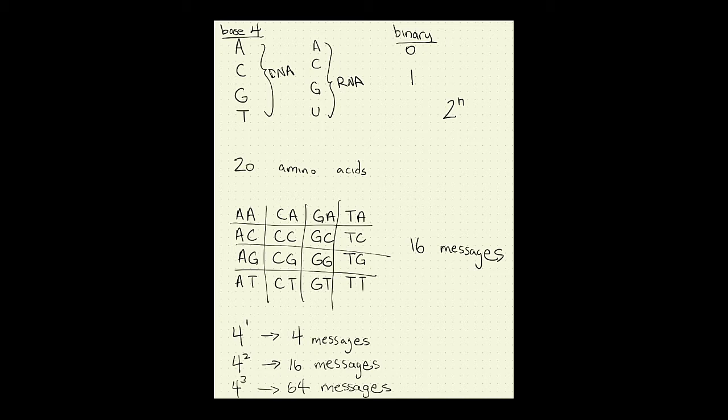We have more than 20 possible messages, giving us some room to spare. We can't talk about 2.5 bases of DNA — that's not a meaningful quantity — so we have a few messages to spare. Amino acids in protein coding sequences are in fact coded by three nucleotide bases. Those three-base messages are referred to as codons.